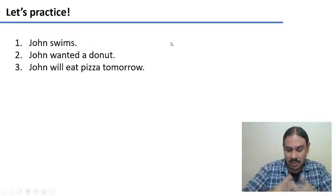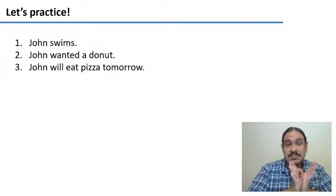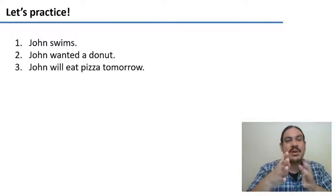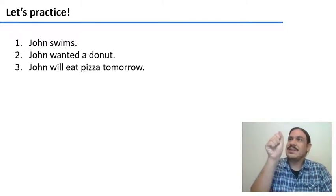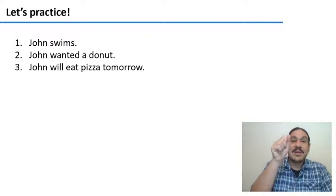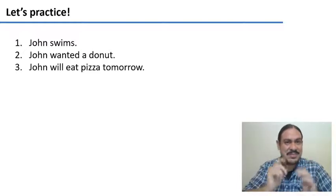With what we saw before, let's try to practice. Please try to draw the trees for the following sentences: 'John swims,' 'John wanted a donut,' and 'John will eat pizza tomorrow.' Go back and forth in the video, copy the previous trees, study them, and then try to draw the trees for these. Remember: the subject goes in the spec position of IP, so it is a direct daughter of IP. And inflectional information like the present tense or auxiliaries goes in the head of the inflection. Please pause the video.